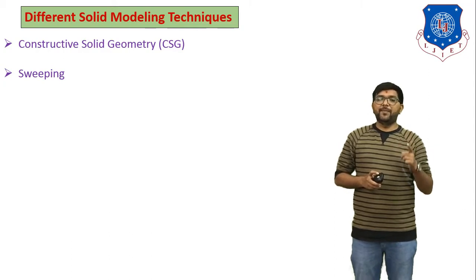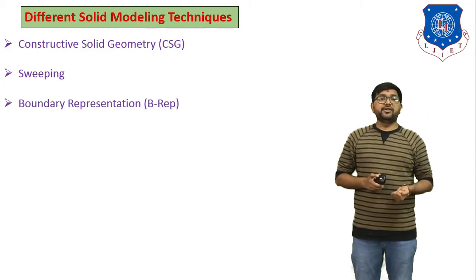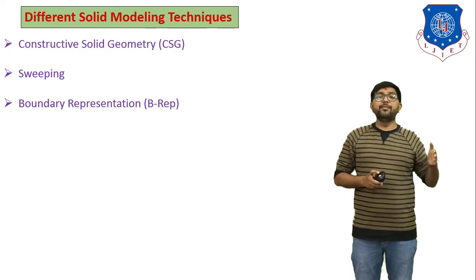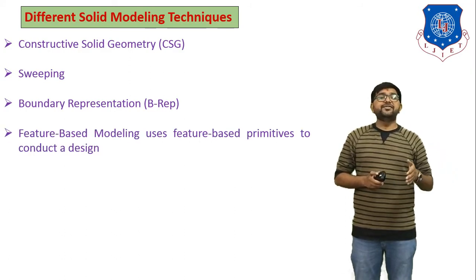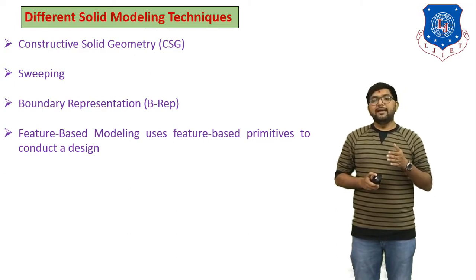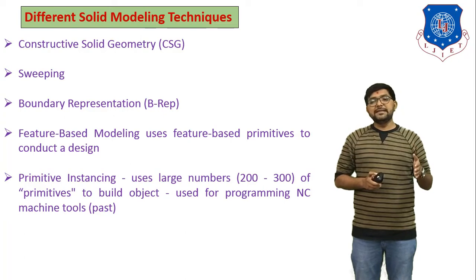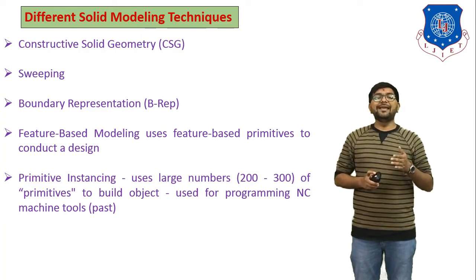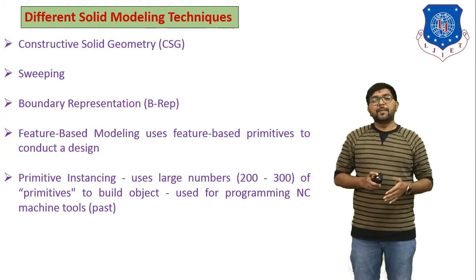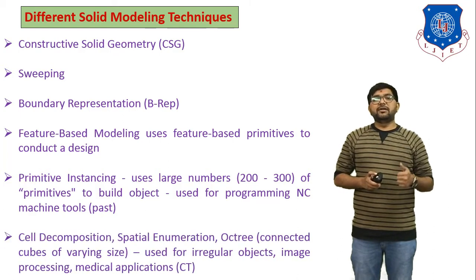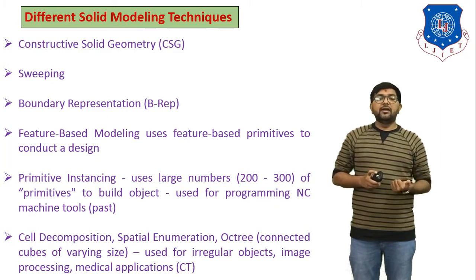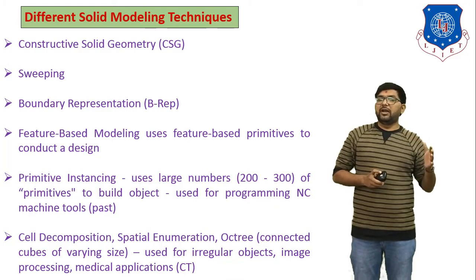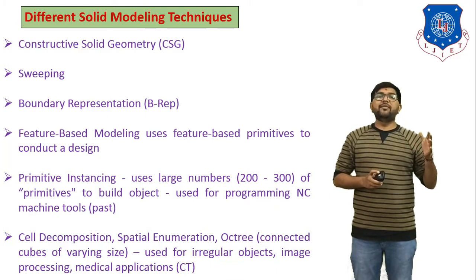The second method is sweeping. Third is boundary representation, also called B-rep. Fourth is feature-based modeling, which uses feature-based primitives to conduct a design. Fifth is primitive instancing, which uses a large number of primitives to build an object and is used for programming NC machine tools. Next methods are cell decomposition, spatial enumeration, and octree encoding. All of these are methods of solid modeling, and we will discuss each one in detail.